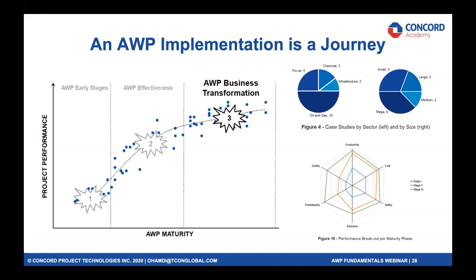For contractors involved in bidding where qualification questions are asked about AWP, it's really not a good idea to say you're doing it when you're not — more and more owners are mature about this and can identify when somebody is not. The right approach is to look at it as a journey, identify your gaps, define a plan to get to best practice, and show the willingness, leadership, motivation, and resources to achieve a predictable outcome. Nothing is better than a win-win where people work collaboratively on a construction project to achieve success.